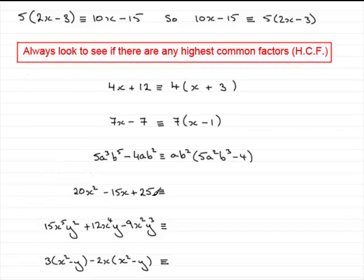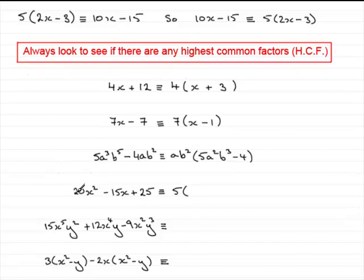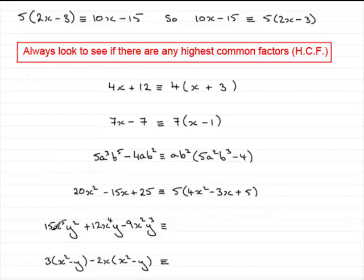Now when we come on to this one, we've got three terms here. Are there any common factors? Yes — 5 goes into each of these three terms. And I gave this example to show you that you don't have to have just two terms. So we've got a 5 that's common and no common letters, so 5 bracket. Then 5 times 4x squared gives 20x squared, 5 times minus 3x gives minus 15x, and what do you multiply 5 by to give plus 25? It's got to be plus 5.